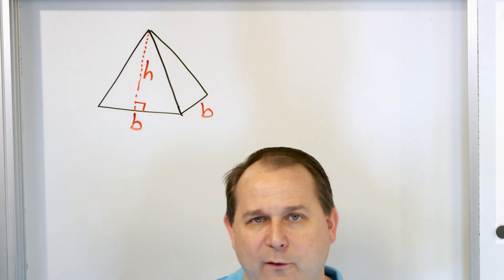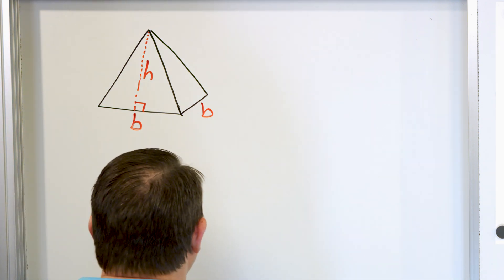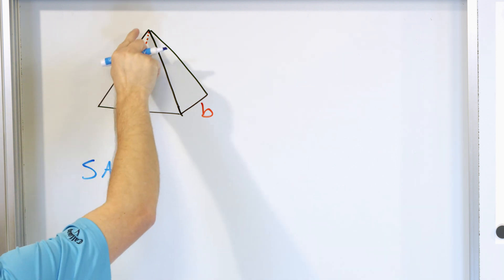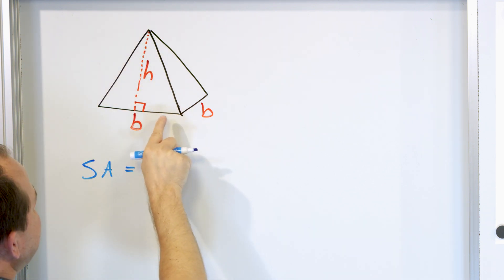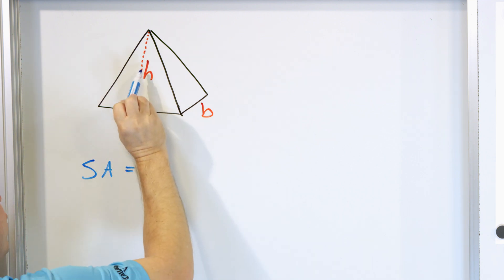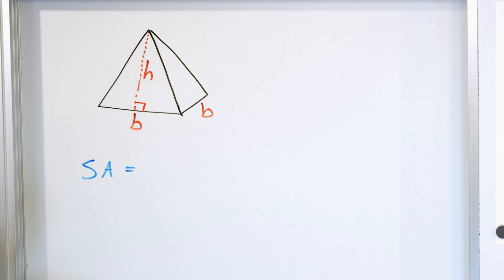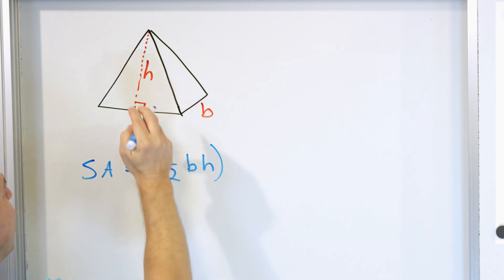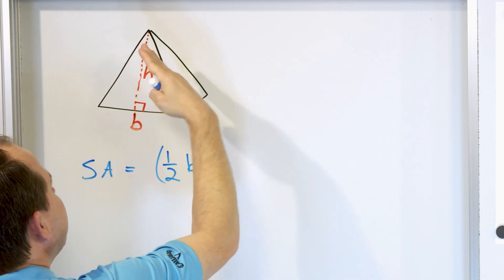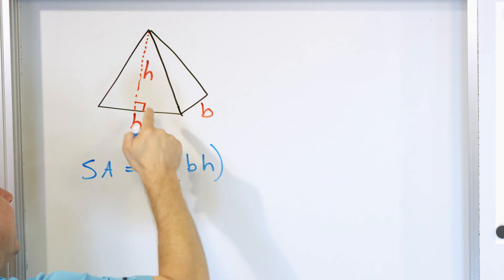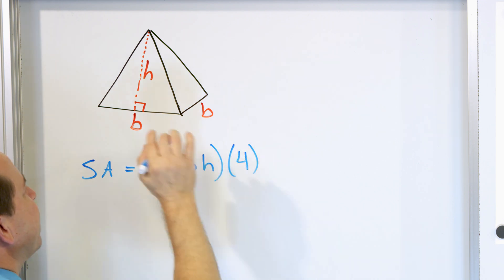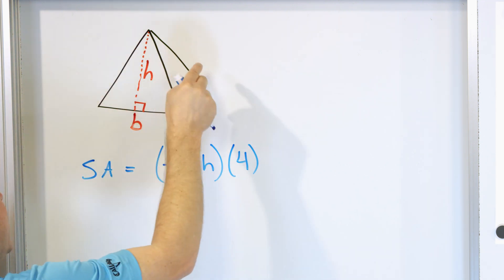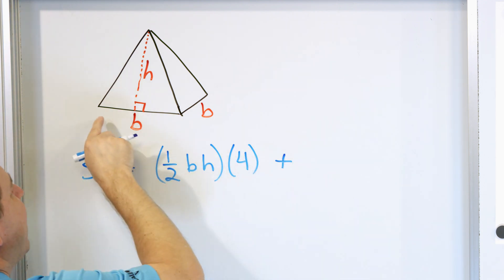Square-based means the base is a square. So how would we find the surface area of something like this? The area of one triangle: the base is B and the height — the slant height H — is the height of that triangle. So one-half times B times H is the area of just one of these four triangles, but we have four of them — one on each side. So we multiply by four to capture the area all the way around. But we also have to add the area of the base.